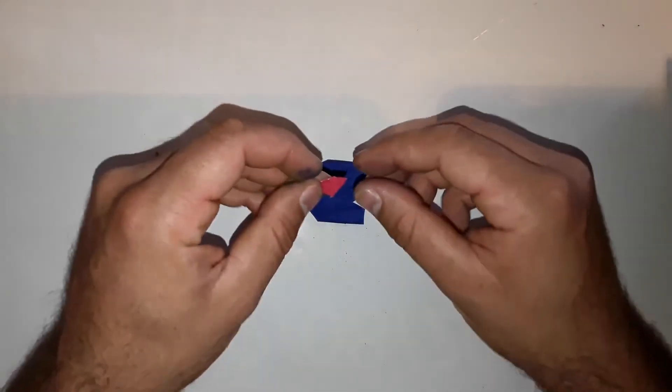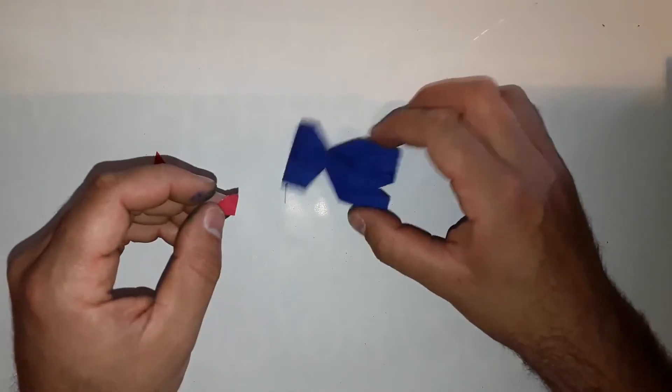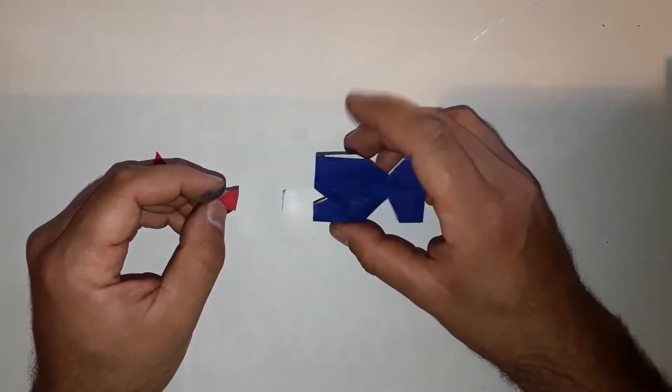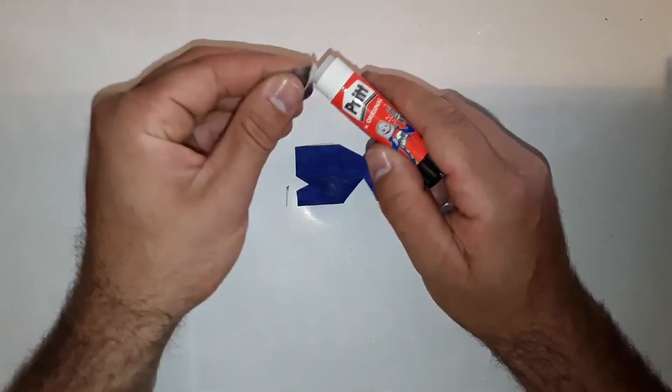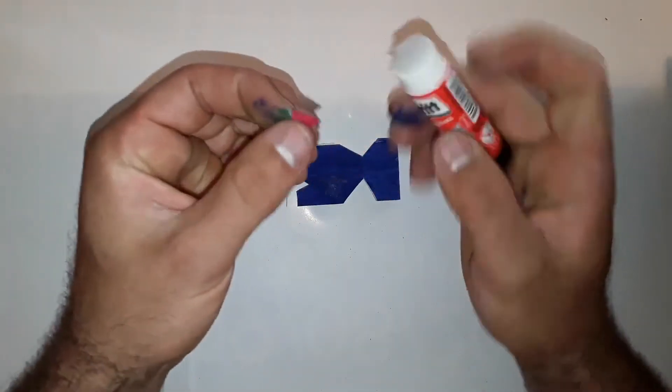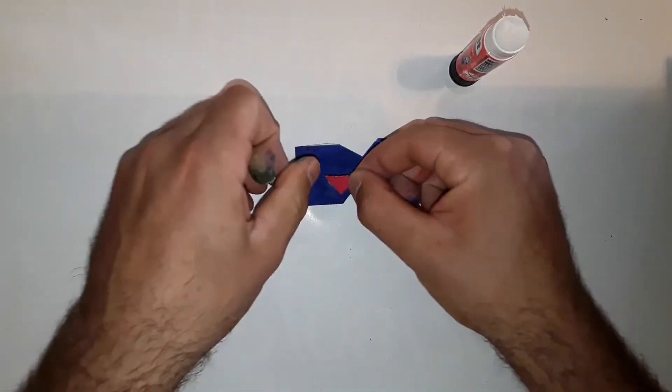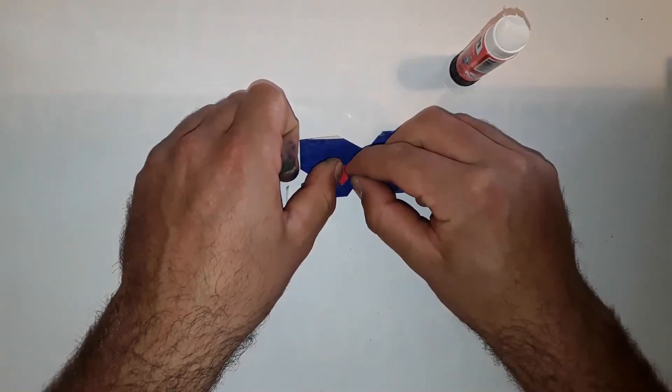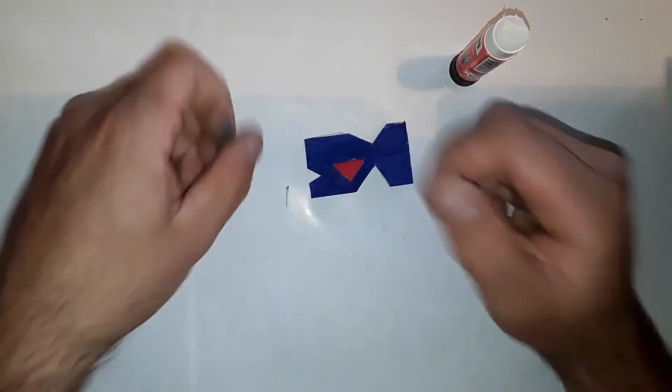Take one of these triangles, apply some glue, and stick it approximately at this spot here.